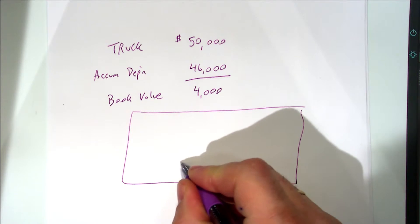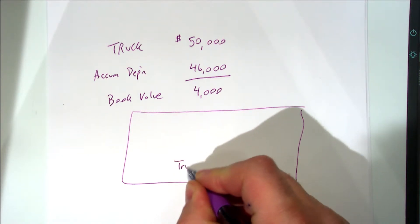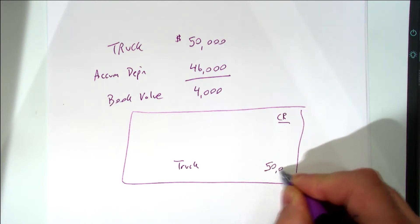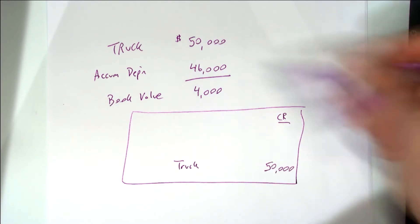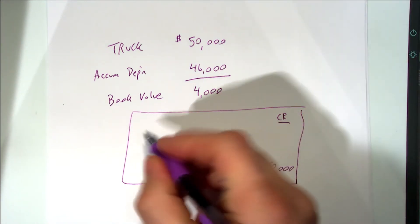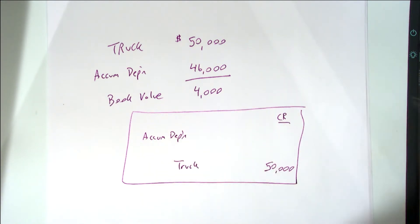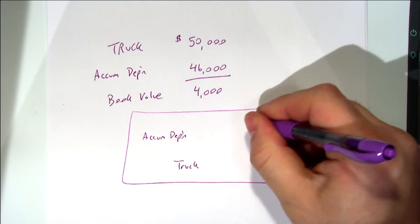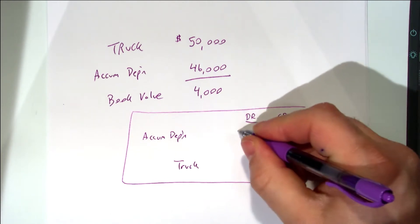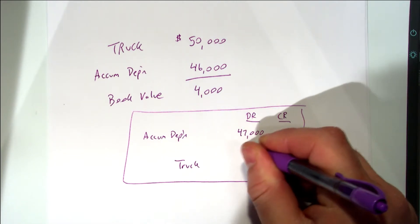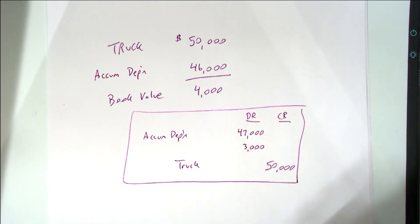Well you're going to credit your truck account for fifty thousand to get the cost off the books. Right? Now you need to take the related accumulated depreciation off the books. Well accumulated depreciation is a credit balance account. Thus to get it off the books we have to debit it in this case for forty seven thousand dollars. You with me? Well that journal entry doesn't balance does it? We have to debit something for three thousand dollars. Does anybody know what we need to debit?